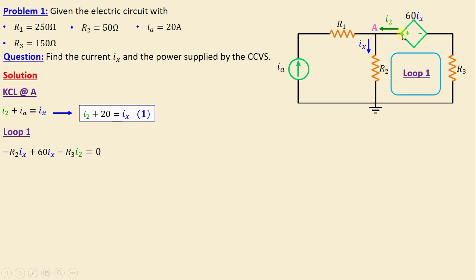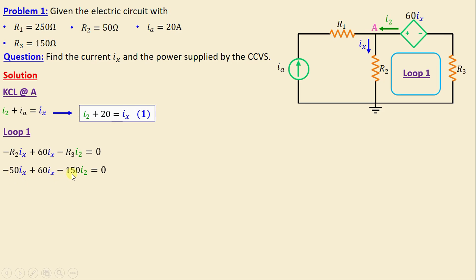By replacing the resistors with their numerical values, we obtain: negative 50 ix plus 60 ix minus 150 i2 is equal to zero. Continuing to simplify this equation, we obtain: 10 ix minus 150 i2 is equal to zero.